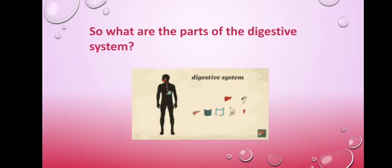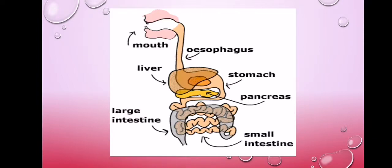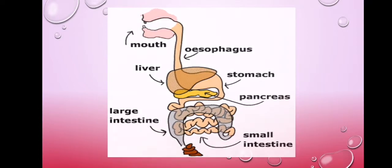What are the parts of the digestive system? Digestion starts in the mouth and ends up in the small intestine.